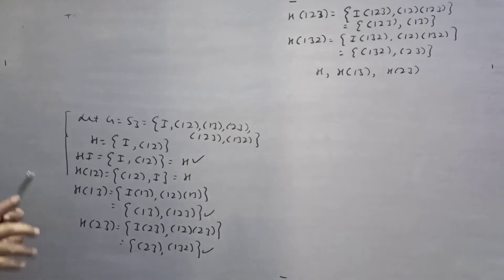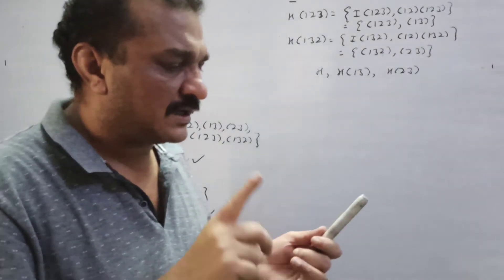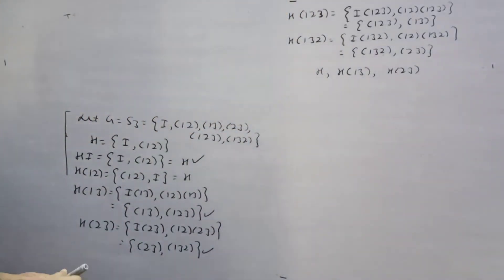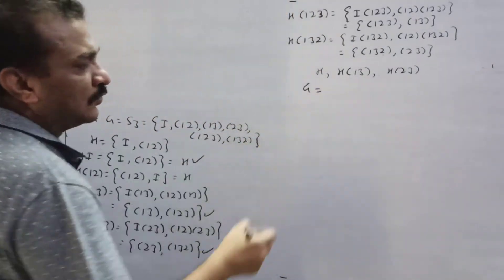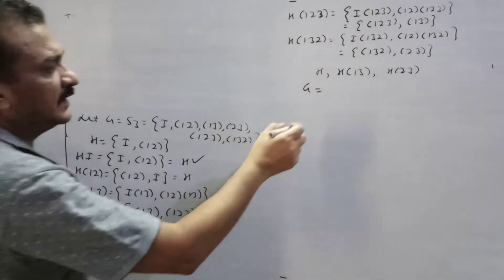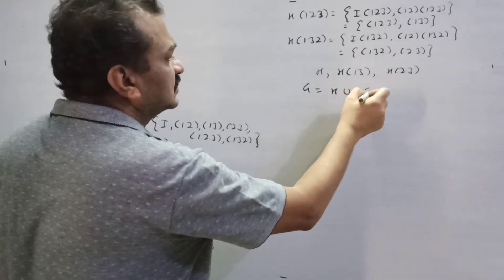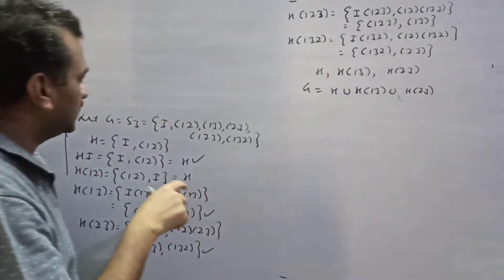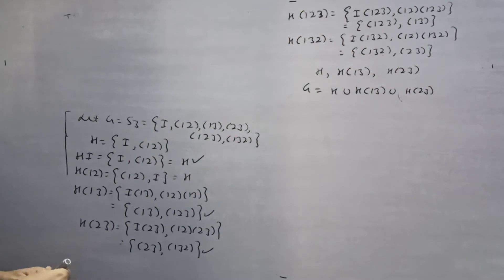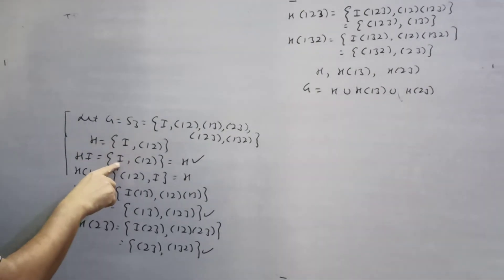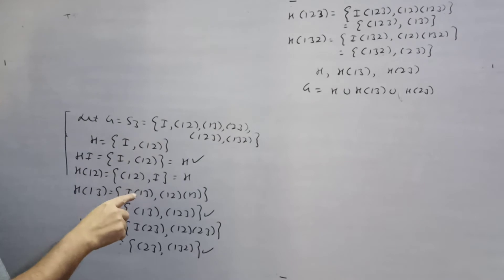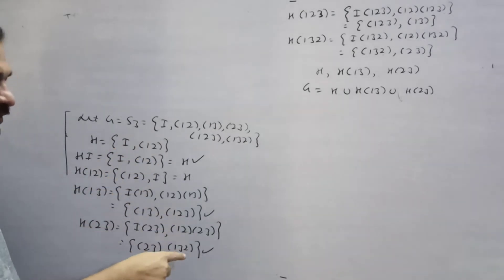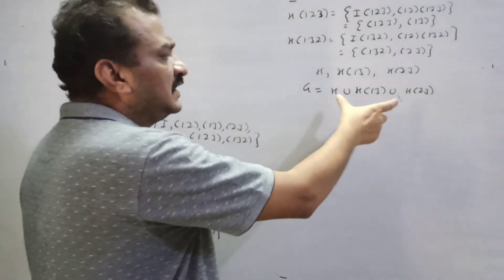So we have different right cosets. By property number one, two right cosets are either identical or disjoint. By property number two, G equals the union of the different right cosets: H union H·(1 3) union H·(2 3). Checking: the union gives all 6 elements of G — I, (1 2), (1 3), (2 3), (1 2 3), (1 3 2).